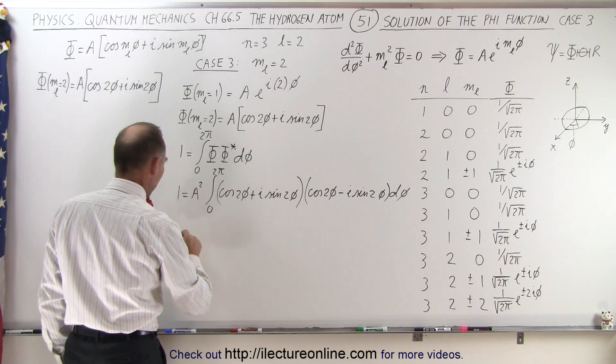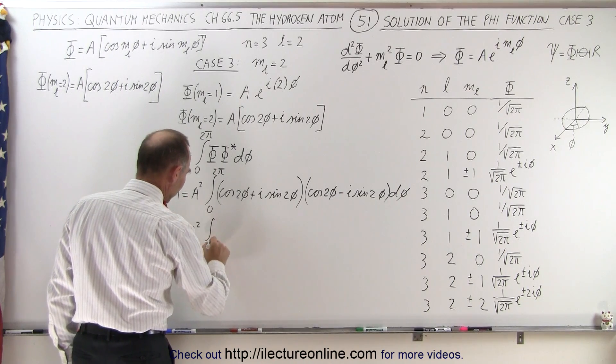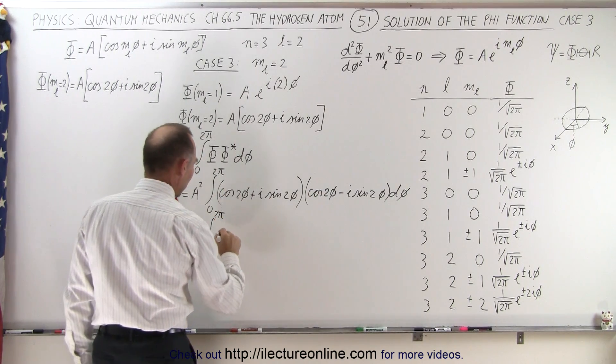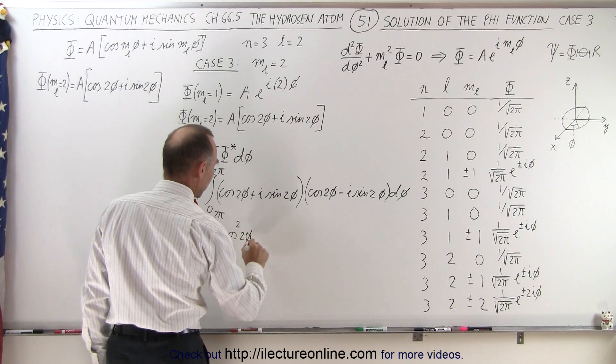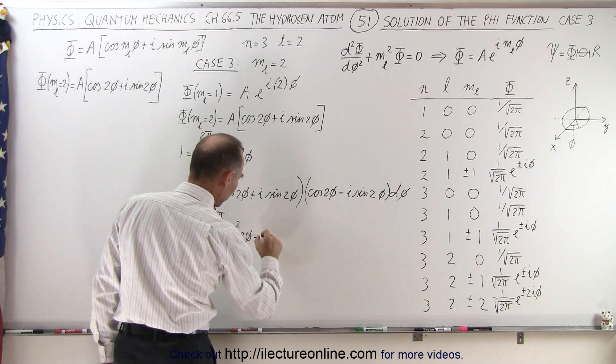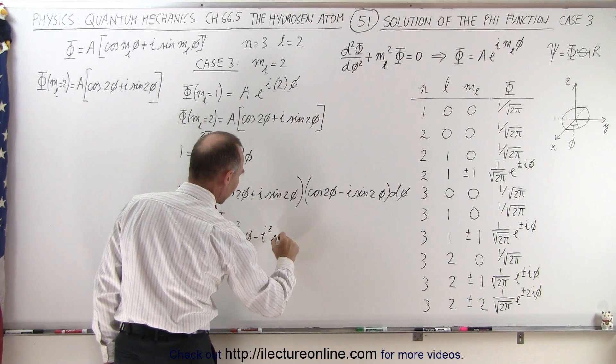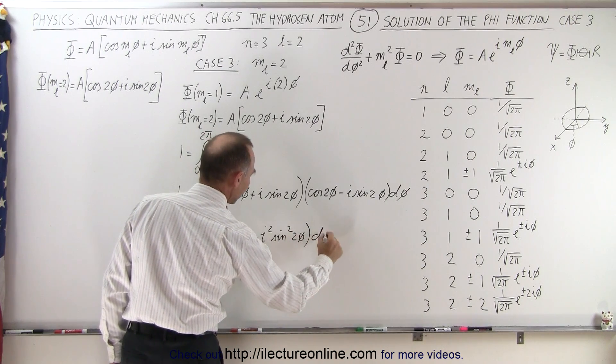So when we multiply this out, we get 1 is equal to a squared times the integral from 0 to 2π. Multiplying this out, we get the cosine squared of 2φ minus, we multiply this out because the middle term disappears, it would be i squared times the sine squared of 2φ. And the whole thing times dφ.